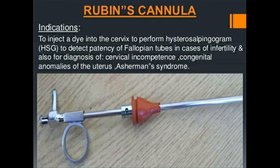It should be noted that Asherman syndrome is an acquired abnormality, not congenital. The congenital abnormalities include uterine septal defects like bicornuate or didelphic uterus.